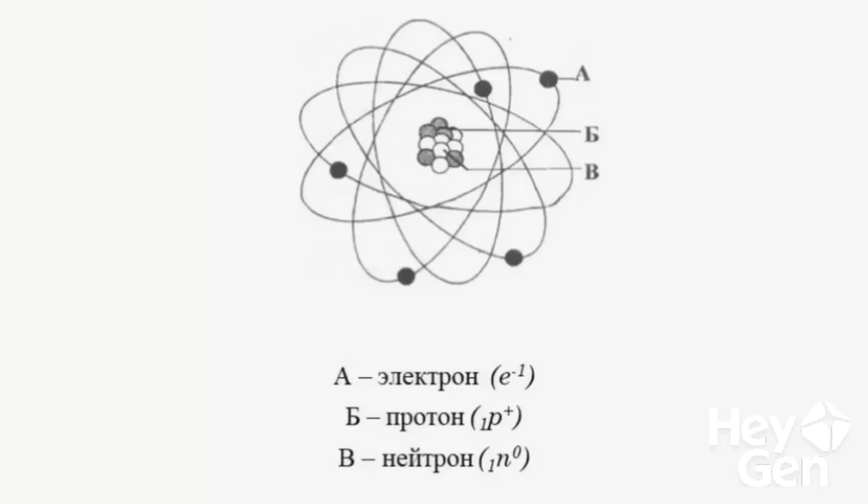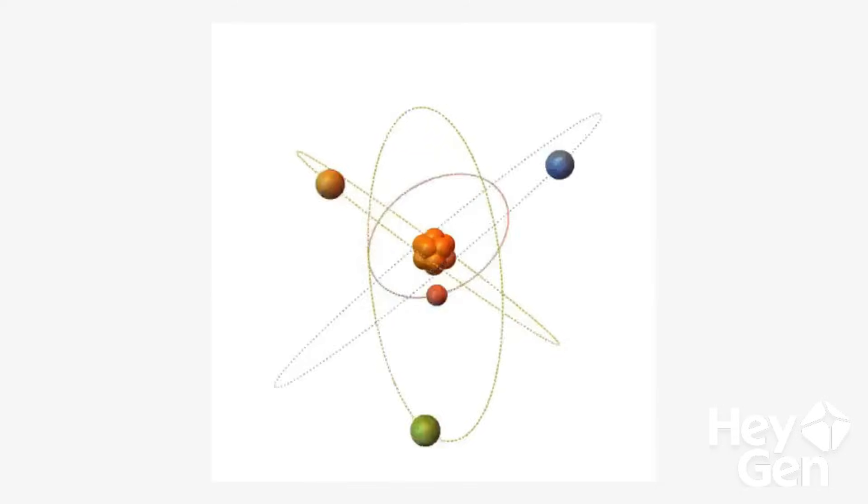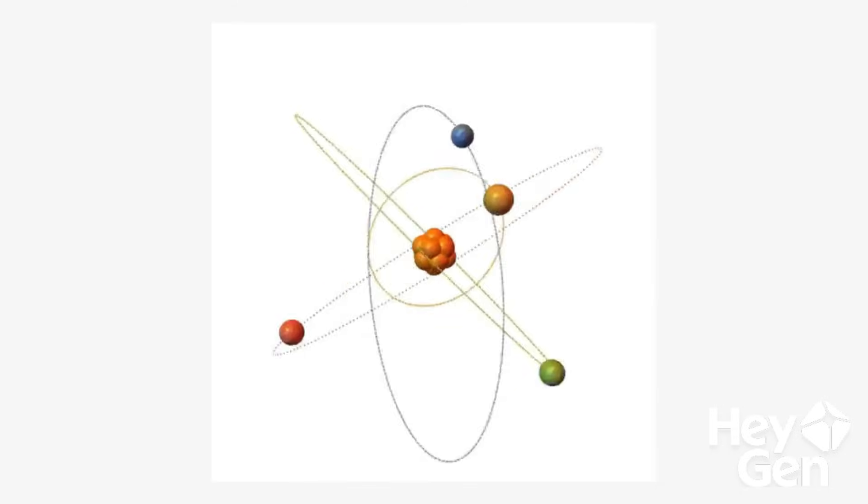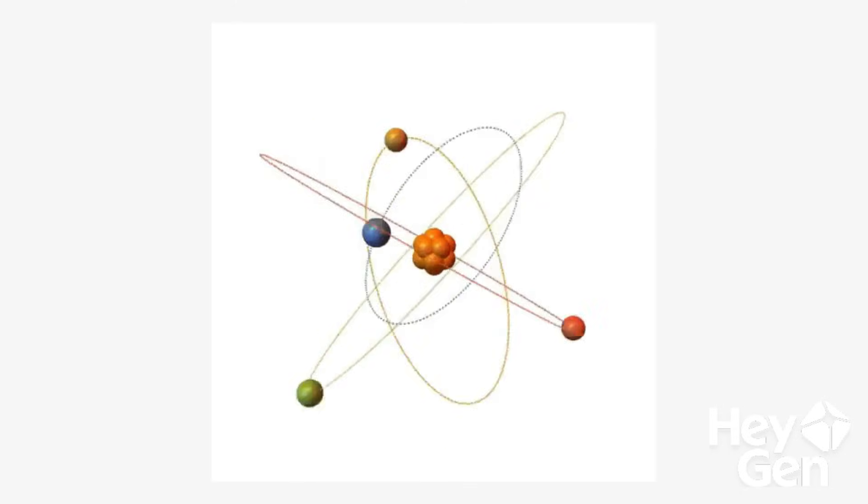What do we know about the atom? First of all, we know that it's a particle, and that the atom itself is also made up of subatomic particles. The structure of the atom is usually described by the standard classical model — the planetary model proposed by Rutherford. However, modern ideas about the structure of the atom have changed significantly, and Rutherford's model remains only in school textbooks as the very beginning of any physics student's journey.